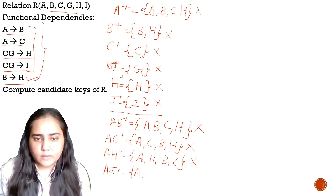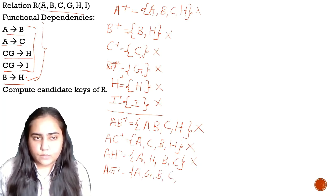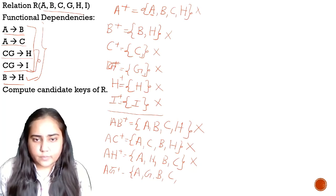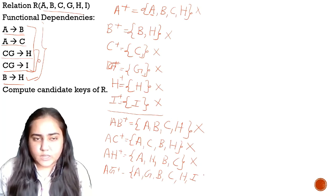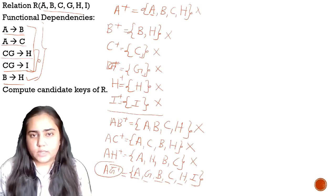In this case I'm going to add A and G. Because of A, I can add B and C. Now notice that I have both C and G present, which means I can finally make use of those two dependencies and go ahead and add H and I. I can also add H because of B determines H, but H is already present. You can see all the attributes are there: A, B, C, G, H, and I. So AG-plus equals all attributes, meaning AG is actually a candidate key — the combination of A and G forms a candidate key.